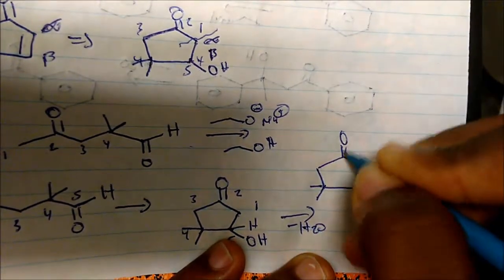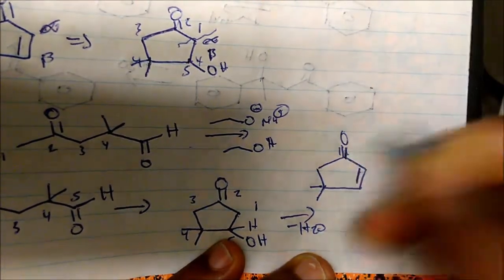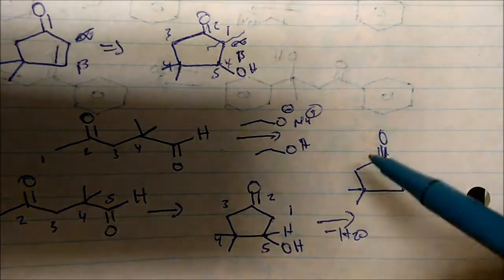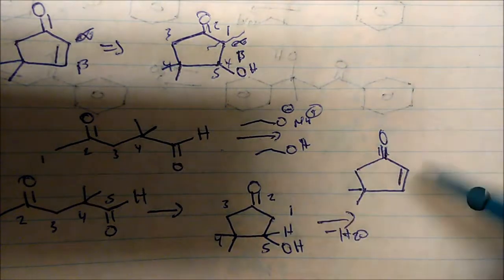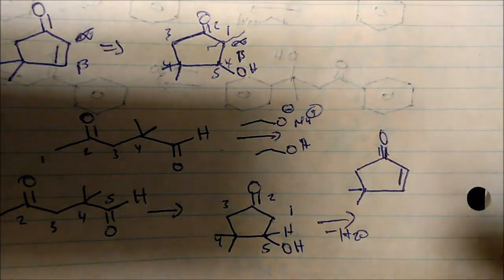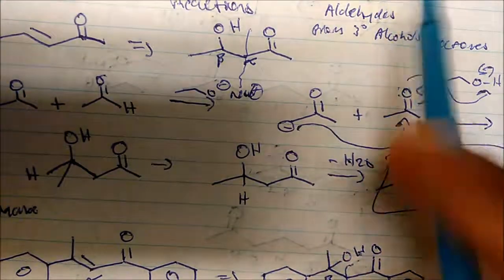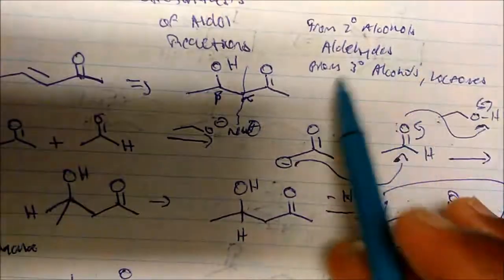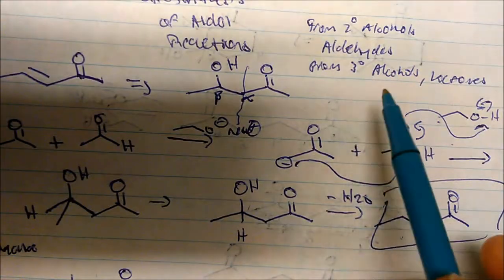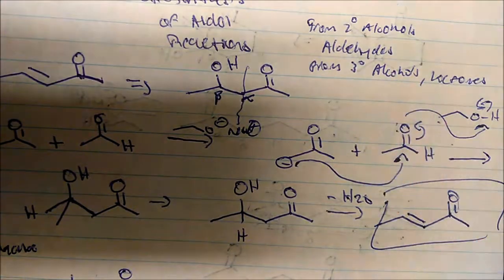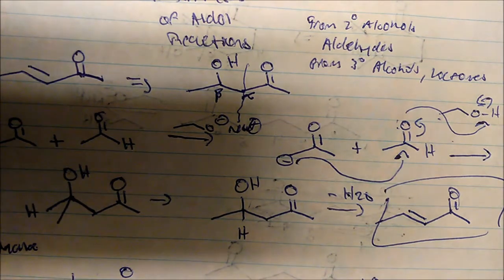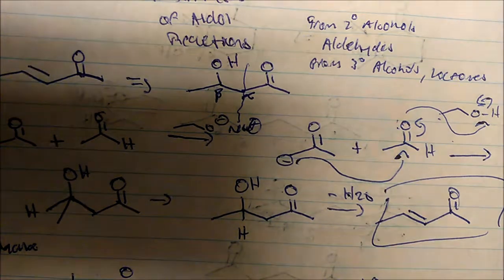We get the observed structure — there's our ketone and the double bond. The general pattern is clear: if you remember that from secondary alcohols we get aldehydes and from tertiary alcohols we get ketones, then retrosynthesis and making these molecules becomes fairly easy.